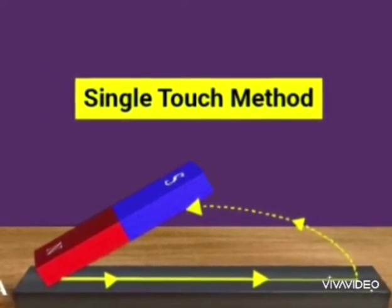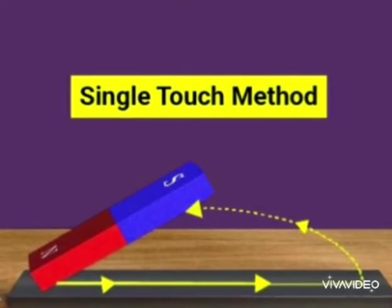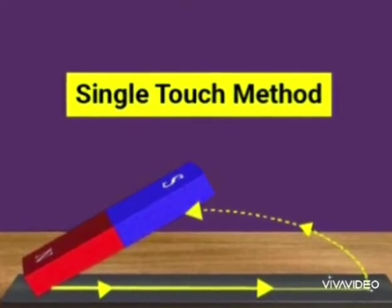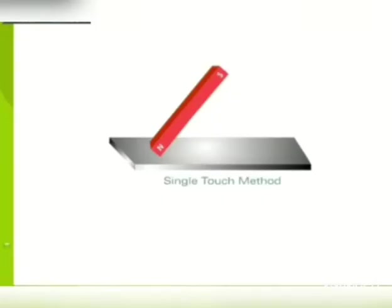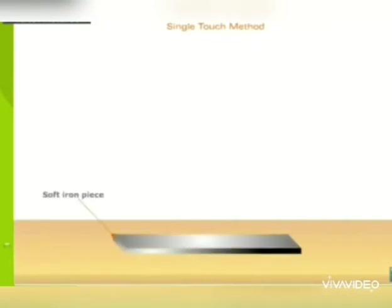Take an iron bar which is to be made a magnet and keep it on a wooden table. Also take a bar magnet. Ek iron bar, jisay magnet mein convert karna hai, ek wooden table ke upar rakhna hai aur ek bar magnet bhi leena hai.